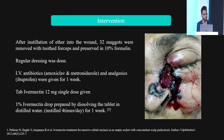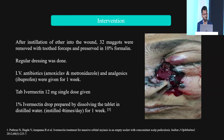On intervention, after instillation of ether into the wound, approximately 32 maggots were removed with forceps and preserved in 10% formalin. Regular dressing was done. IV antibiotics — amoxiclav and metronidazole — along with analgesics were given for one week. Ivermectin 12 mg single dose was given, and 1% ivermectin drops prepared by dissolving the tablet in distilled water were instilled four times a day for a week.